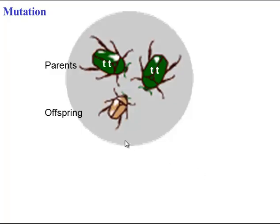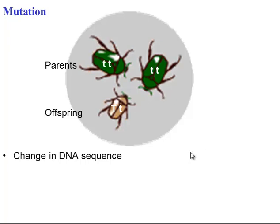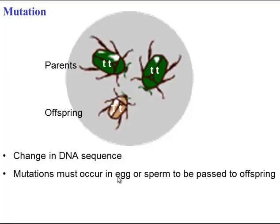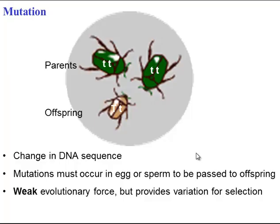Mutation is another evolutionary force. If two parents both have only the recessive allele but their offspring has a dominant allele, that may be due to a mutation — an error in DNA replication that changed the DNA sequence. This can only lead to evolution if the mutation occurs in the egg or sperm, since those are the only cells passed on to offspring. Mutation is a weak evolutionary force because mutation rates are usually low, but it does provide variation that can be acted on by more powerful forces like selection. Unlike selection, mutation is not necessarily adaptive — it could be good or bad depending on the environment.